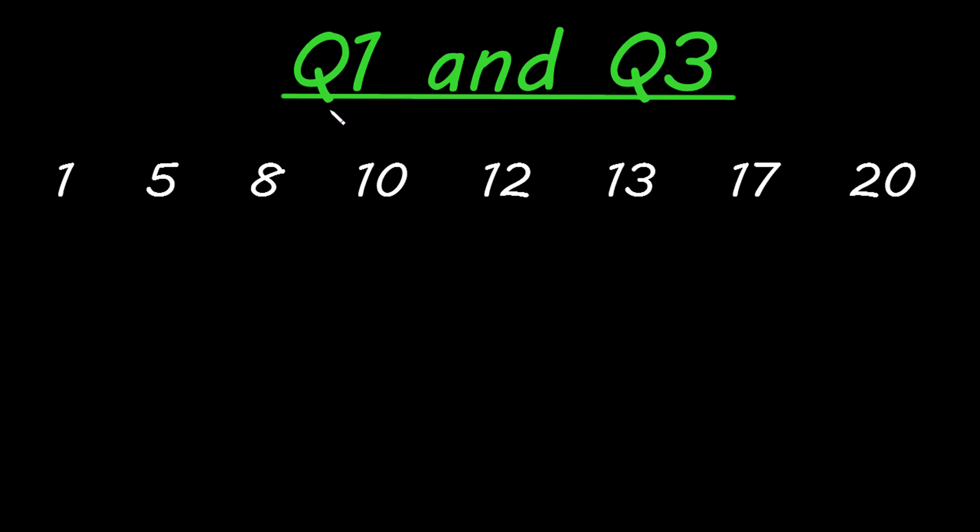The definition of Q1 is the first quartile. The exact definition is a value where we have 25% of our data points under it. So 25% of the data that we have is under this value of Q1.